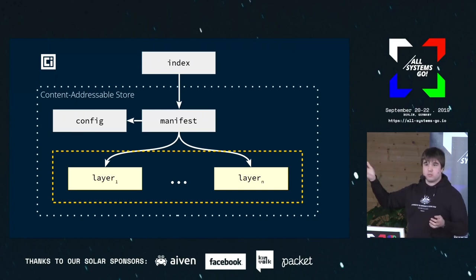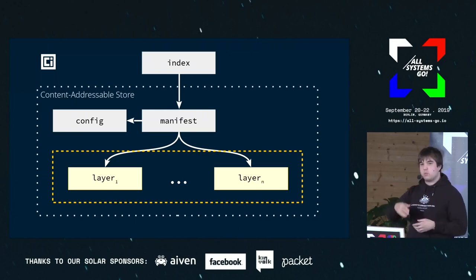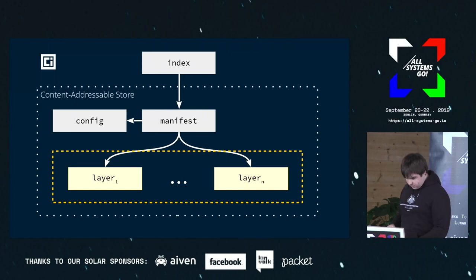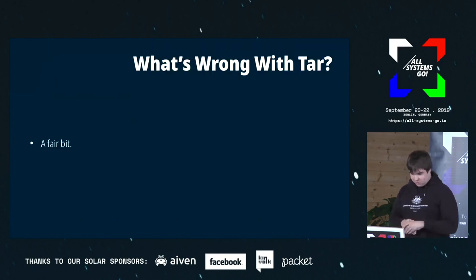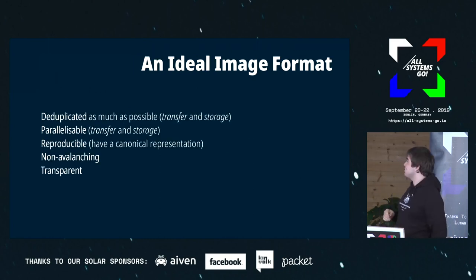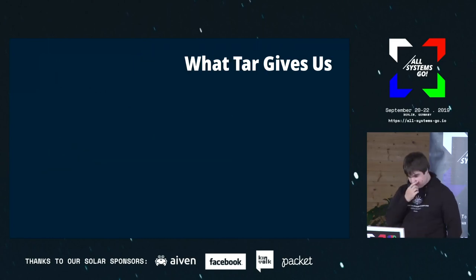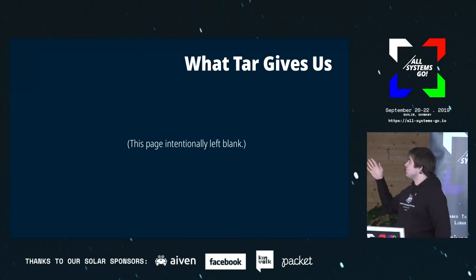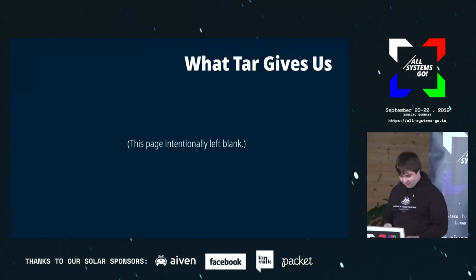Container images have layers — this is the first thing you see when you run Docker build or Docker run, where you download all these different things. Every single one of these layers is a separate tar archive of a root file system applied in order. Going back to the ideal image format — this is everything you want, and this is what tar gives us — basically none of it. None of these features are actually present in tar archives, especially with the way we use them.